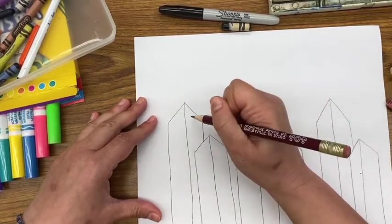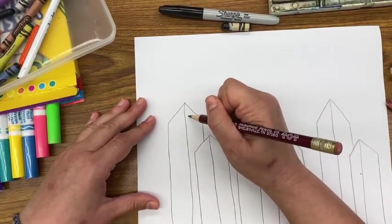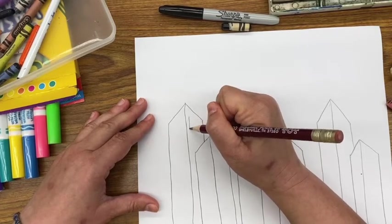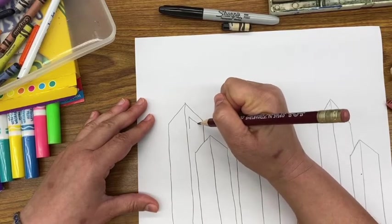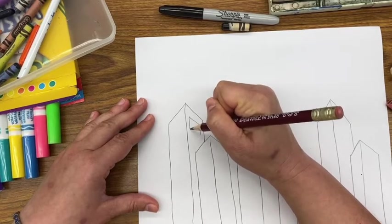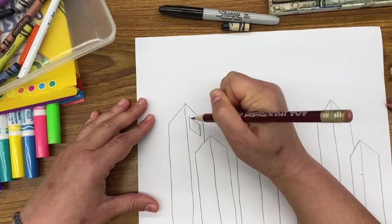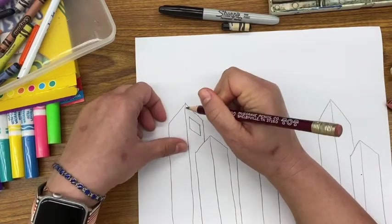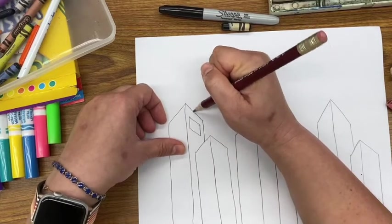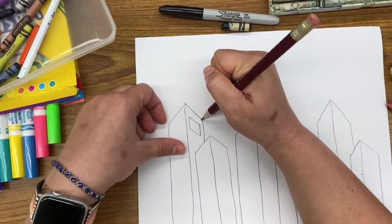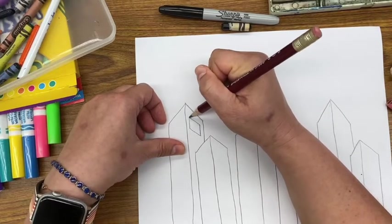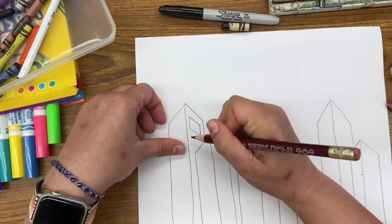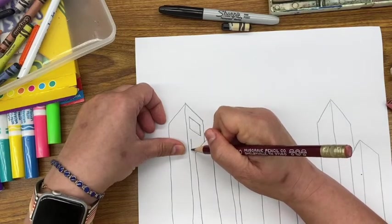And to show more perspective in the direction of those windows, I'm going to make a rhombus or a parallelogram where this line of the upside-down V is parallel to the line, and it'll give you more perspective.